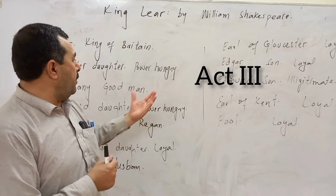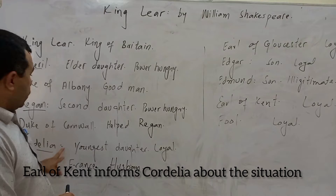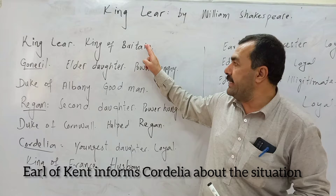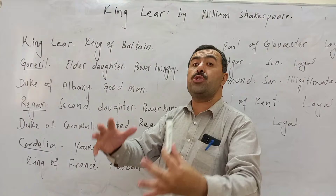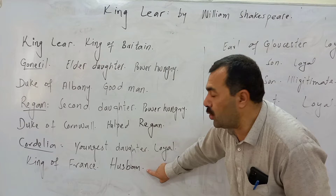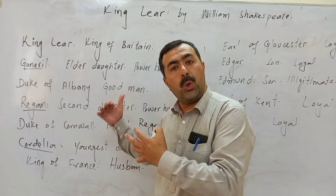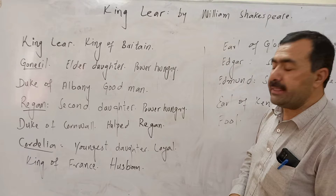Now in Act Three, Kent runs away from Regan where he was captured, and he goes to France to meet Cordelia. He tells Cordelia the whole story about the conduct of Goneril and Regan. Cordelia becomes upset and wants to help her father. She, along with her husband the King of France, makes and arranges an army and goes towards the coast of Britain to help.